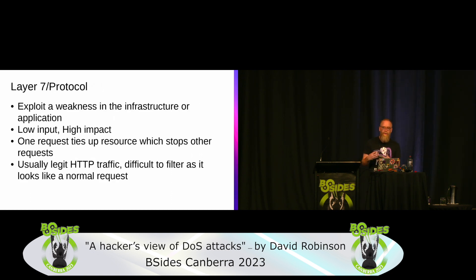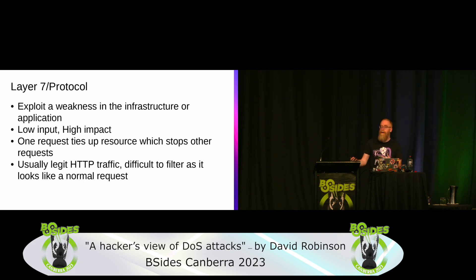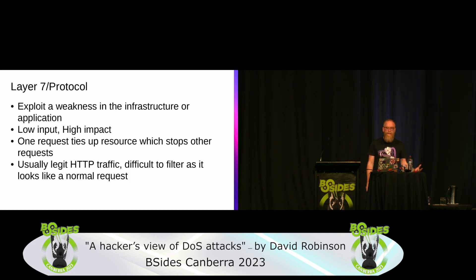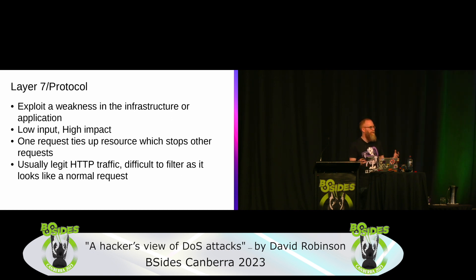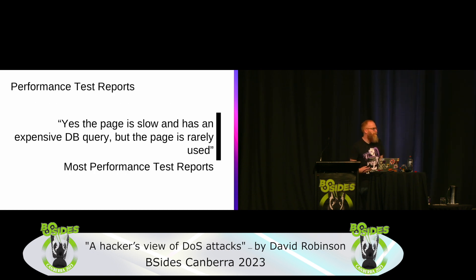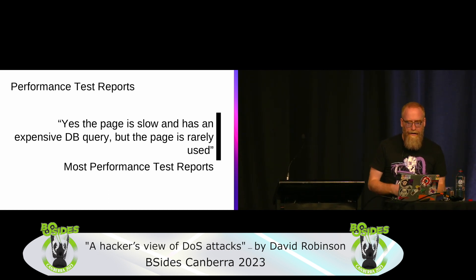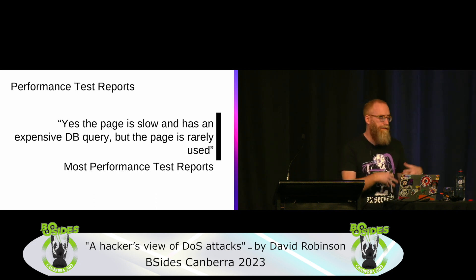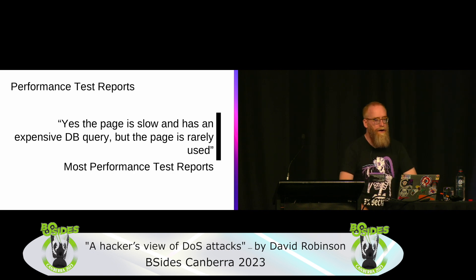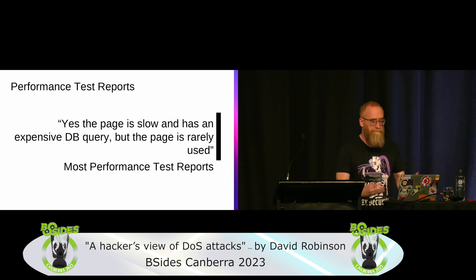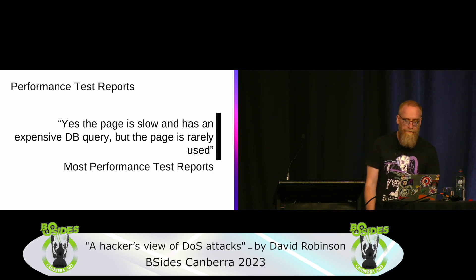Layer 7 protocol attacks exploit a weakness in the infrastructure or application. These are attractive to attackers because they're low input for high impact — one request ties up resources and stops other requests from happening. They're hard to block because they look like legitimate traffic. If you've had a performance test done and they found slow pages with expensive database queries that users rarely visit, from a performance perspective that's not worth fixing. But as an attacker, that's exactly what I want to hit over and over because it's chewing up CPU or RAM resources.